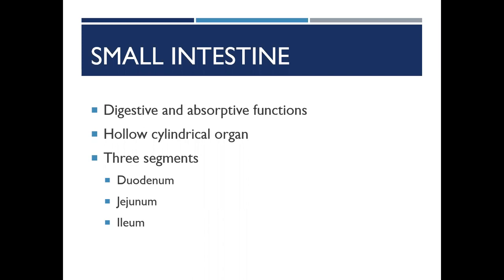The mid-region of the small intestine is the jejunum, which controls carbohydrate and protein absorption. If your patient has a GJ tube, the G is going to be in the stomach and the J — the jejunum — is going to be in this location. Our third section is the ileum. This extends from the jejunum to the ileocecal valve at the cecum of the large intestine. The ileum is responsible for the absorption of fats, bile salts, and water.